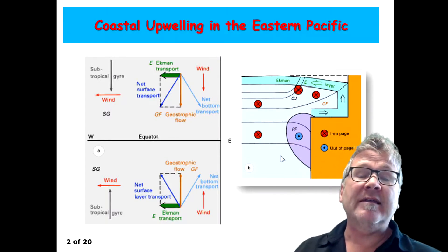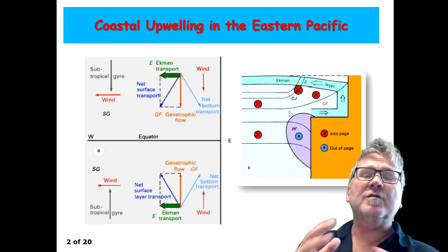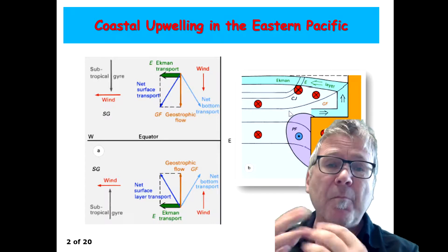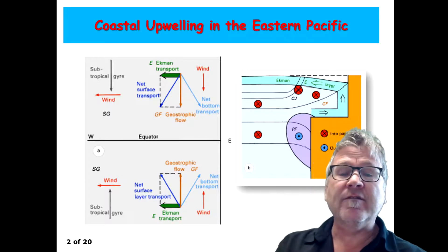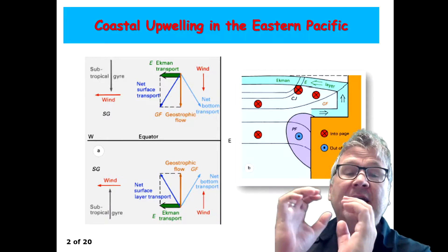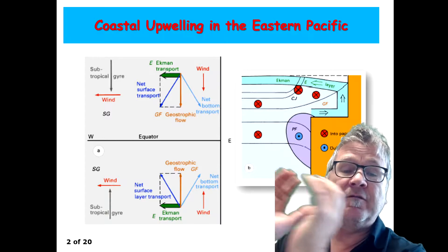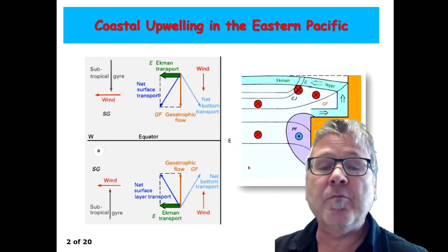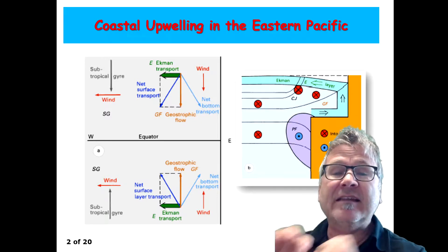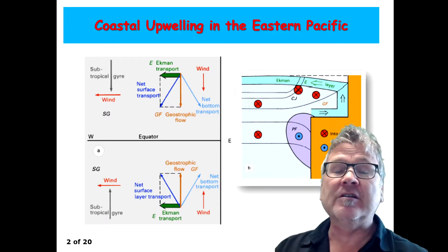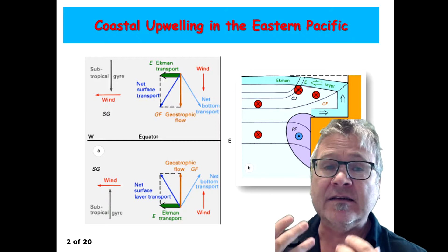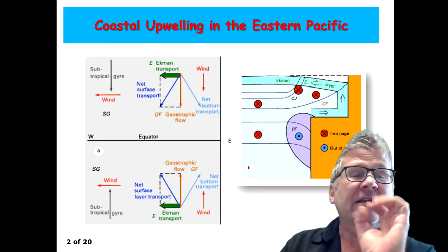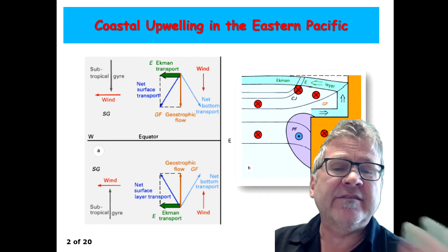What you also should just remember is that the upwelling current, the geostrophic flow itself, separates actually from the coast. And you find the geostrophic jet, the coastal upwelling jet. You can identify this as a frontal current, as a density front. Let's have a look at some observations.